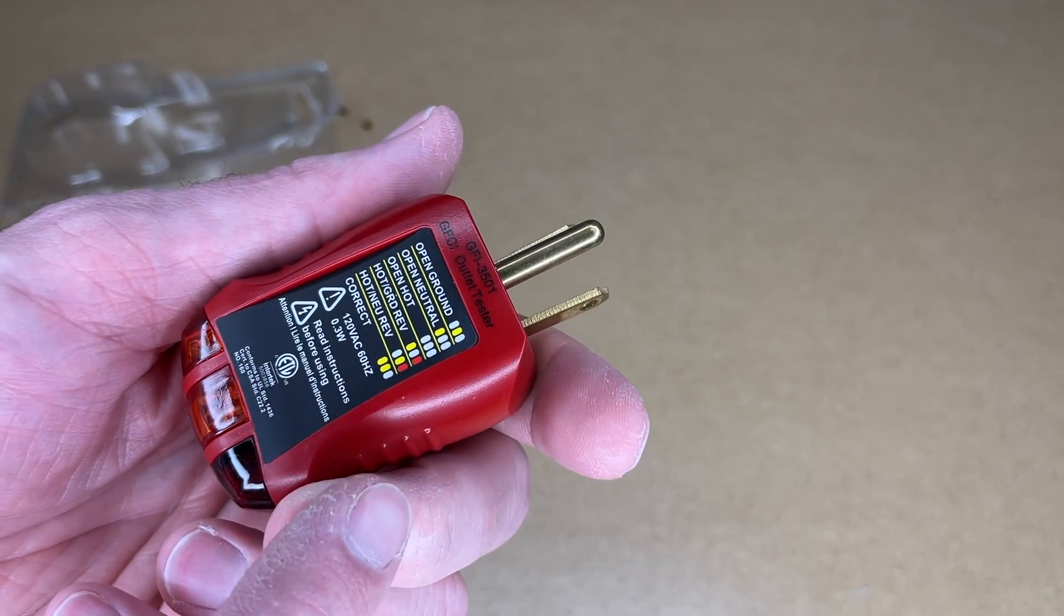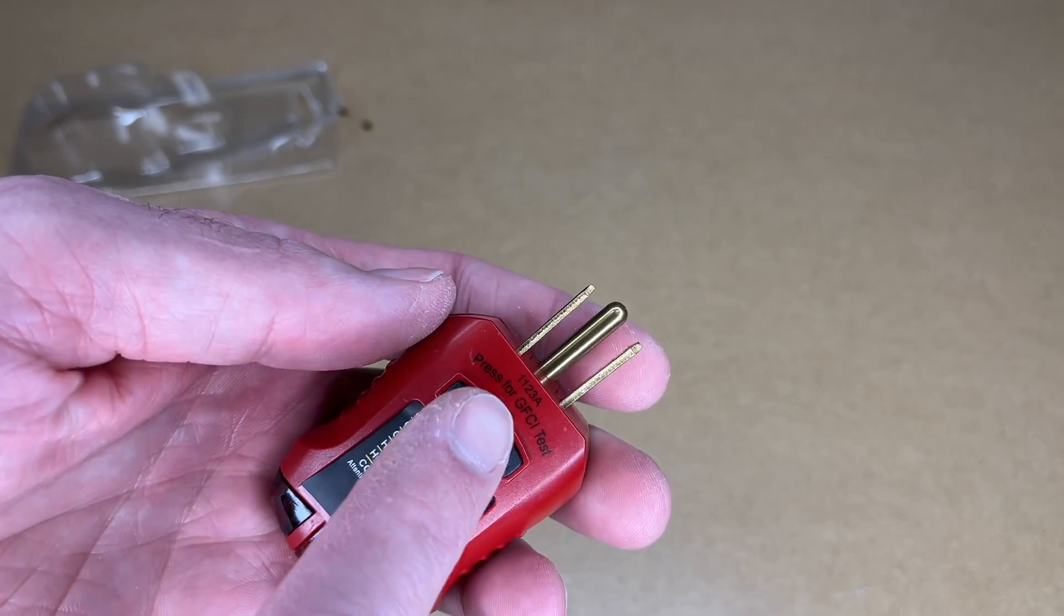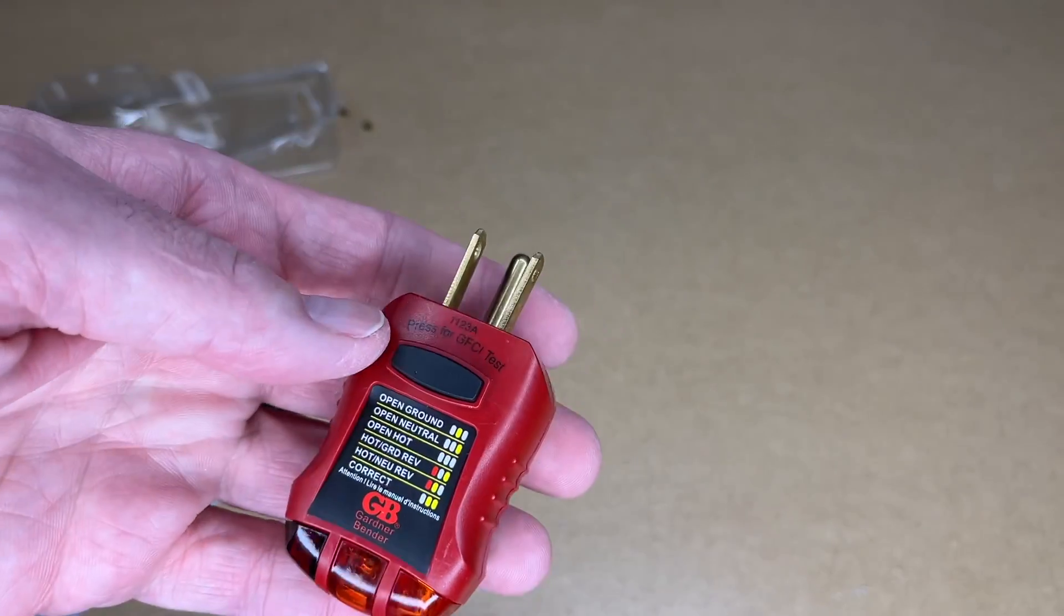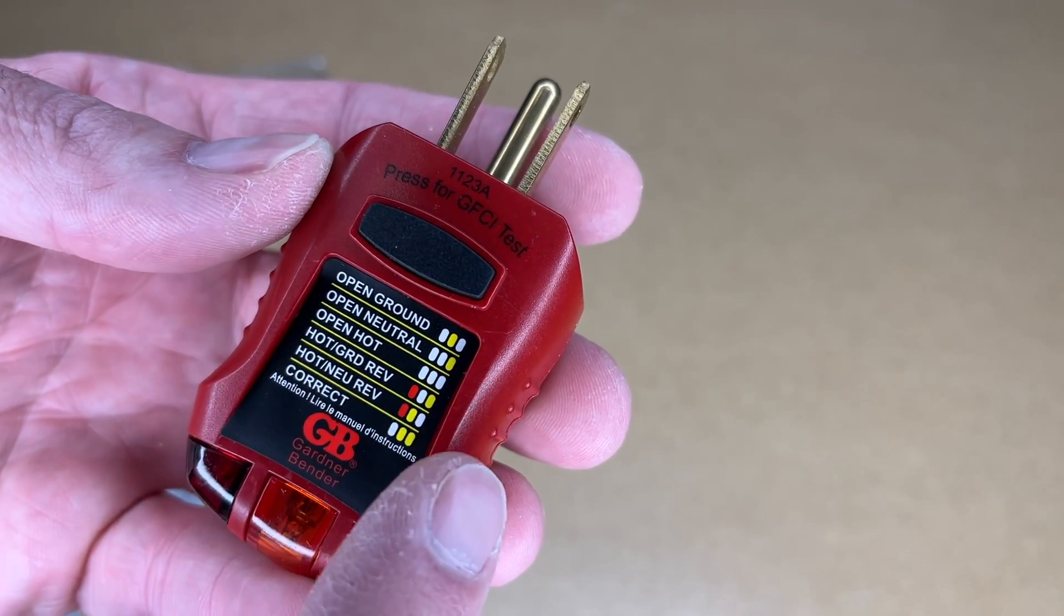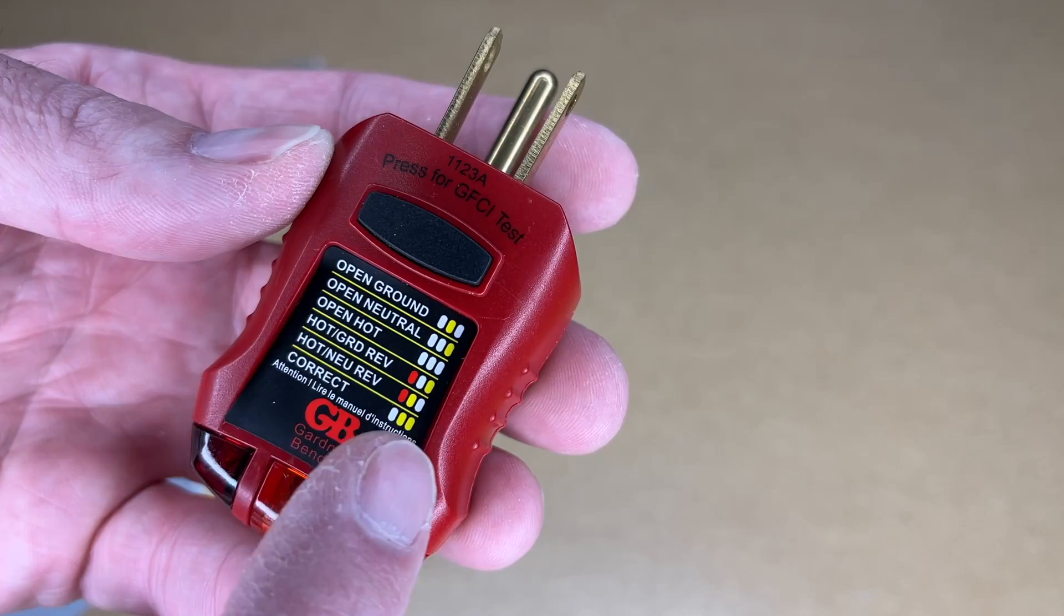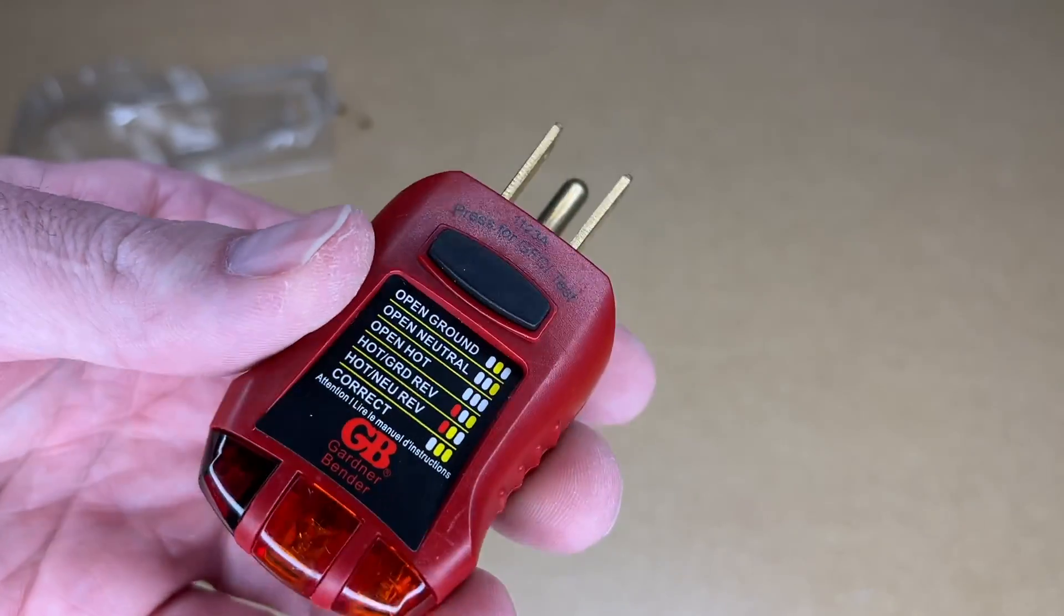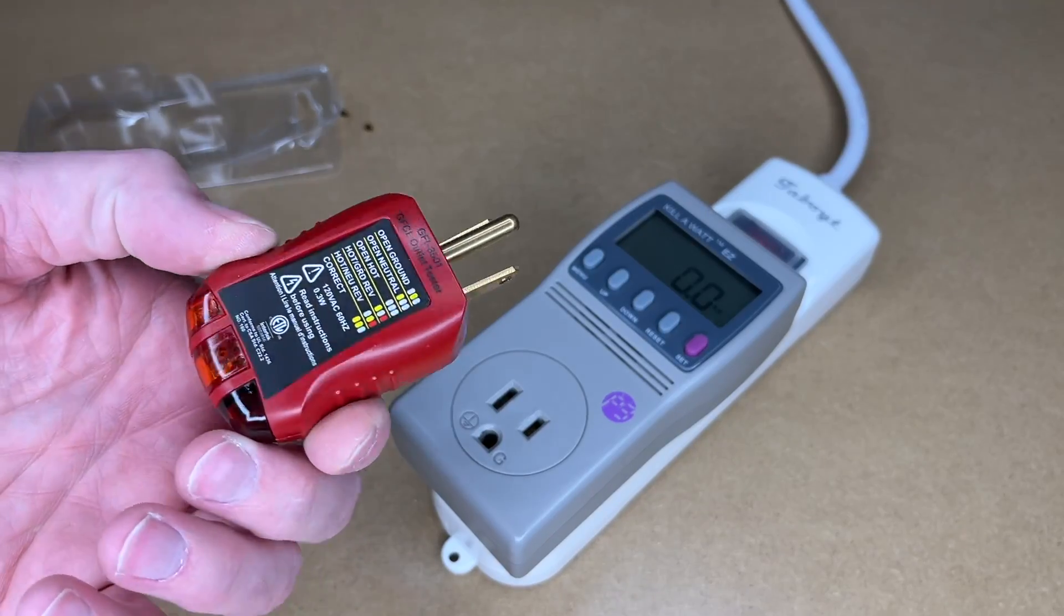It doesn't matter which direction your outlet is wired, but it does only have the button on one side. You could feel for it if it's upside down. This tests for open ground, open neutral, open hot, hot ground reverse, hot neutral reverse, and correct. Let me try this on a couple different outlets. This draws 0.3 watts.